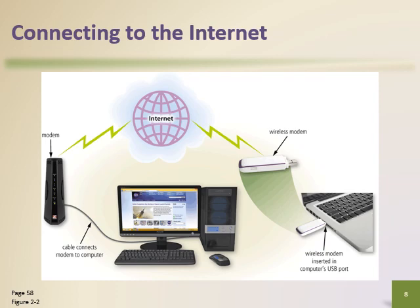This is a picture showing how you can connect on the internet. A modem has one cable connected to it and another cable going to your PC — that cable connects your modem to the computer, and the modem connects to the internet providing all network services. You can also plug a wireless modem into your USB port, or use a dongle — a small device with no wire that you recharge, such as those offered by Zong or Jazz.